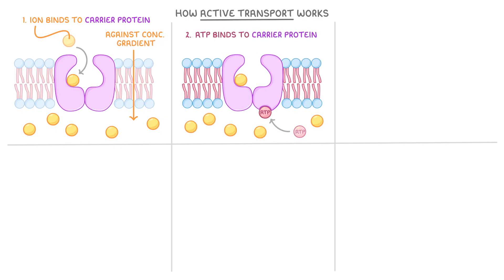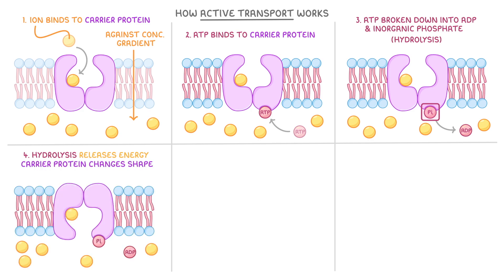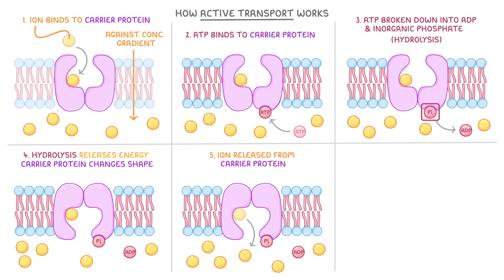Then, a molecule of ATP binds to the carrier protein, and this ATP is broken down into ADP and an inorganic phosphate, often represented as Pi, in a process known as hydrolysis. This hydrolysis reaction releases energy, which causes the carrier protein to change shape. The ion is then released from the carrier protein on the opposite side of the membrane, where its concentration is higher.